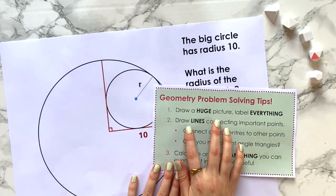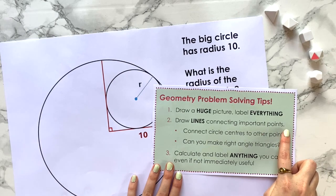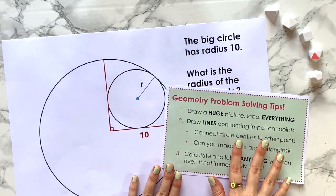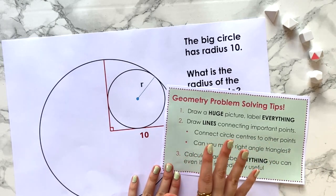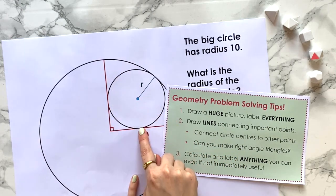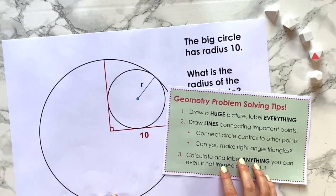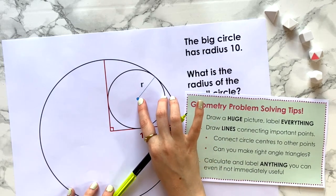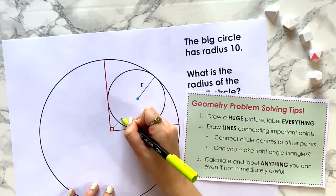Step two is draw lines connecting important points. By important points I mean points that stand out as being a bit significant—possibly the centers of circles or maybe where lines intersect. Let's give that a go now. This is the center of a circle, as is this one, so let's connect them to each other.